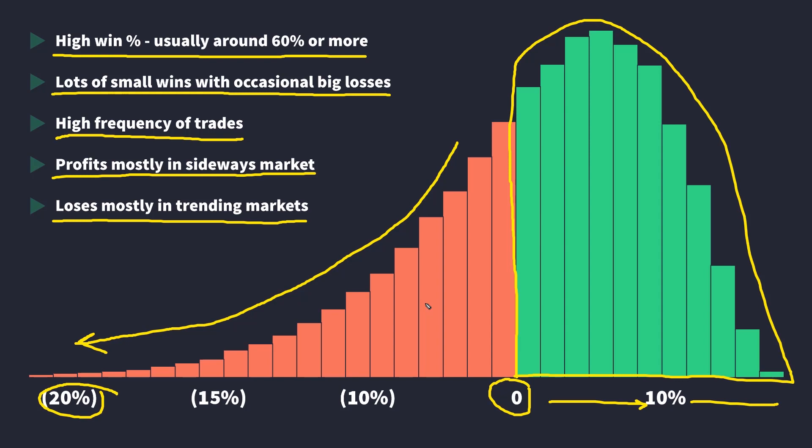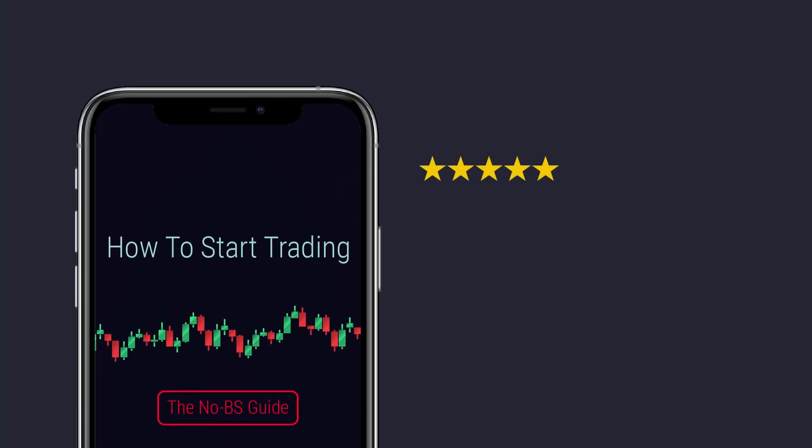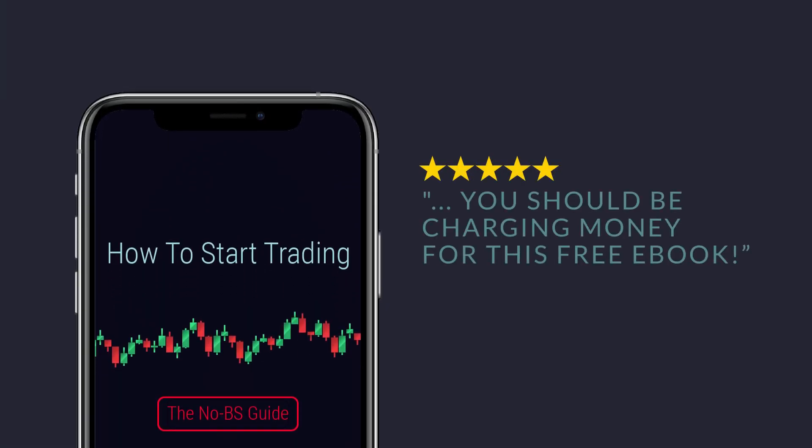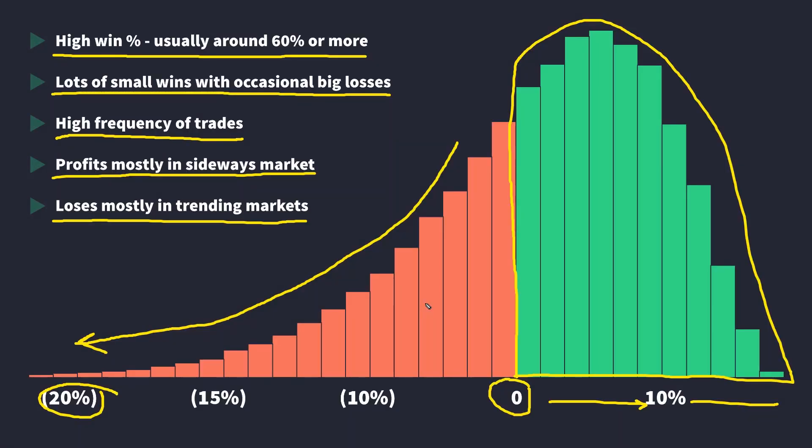I myself have a couple of mean reversion strategies in my own portfolio, and they stop taking any new trades when the market starts trending down. Before we get any further, make sure to download my ebook — it's completely free and has been read by more than 8,000 people to date with overwhelmingly positive reviews. In the ebook, I discuss common mistakes made by most traders and how you should start approaching trading differently in order to maximize your odds of success. Click the link on the screen or in the description to get your free copy.